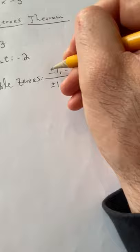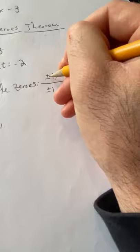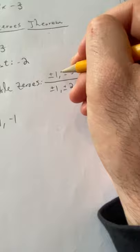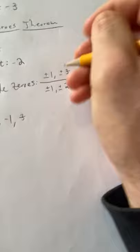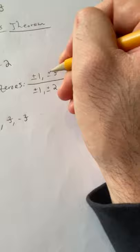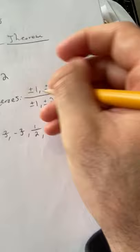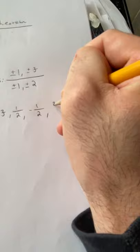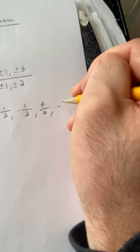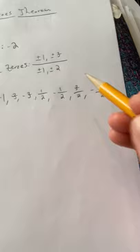If we list out all of these possibilities: 1 over 1 gives 1; negative 1 over 1 gives negative 1; 3 over 1 gives 3; negative 3 over 1 gives negative 3; 1 over 2 gives one half; negative 1 over 2 gives negative one half; 3 over 2 gives three halves; and negative 3 over 2 gives negative three halves. There are all our possibilities.